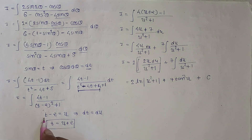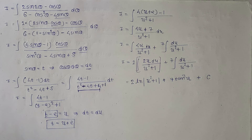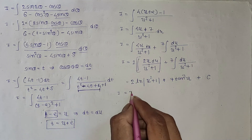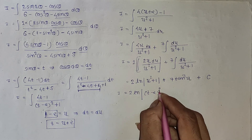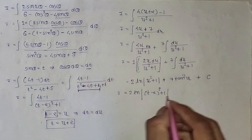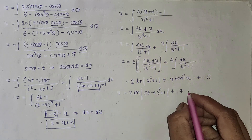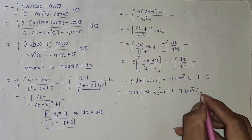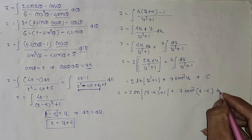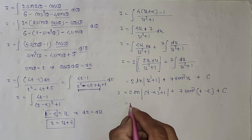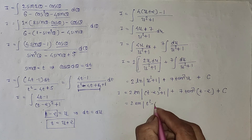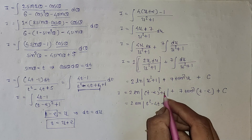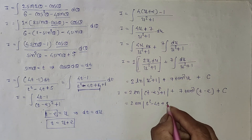Now put u equal to t minus 2. So I equal to 2 ln of absolute value of t minus 2 whole square plus 1, plus 7 times arctan of t minus 2, plus c. Which simplifies to 2 ln of t squared minus 4t plus 5, plus 7 arctan of t minus 2, plus c.